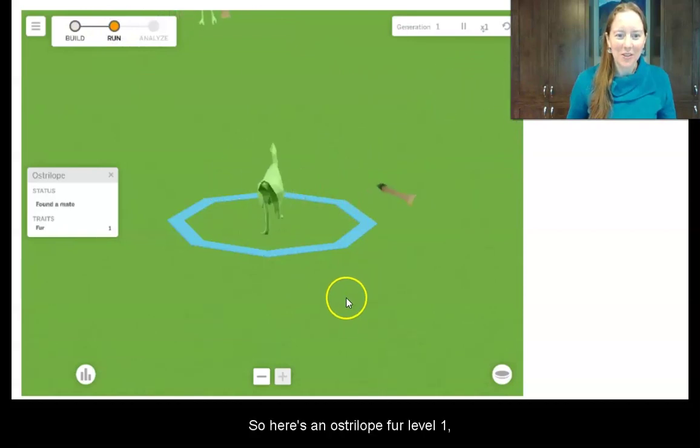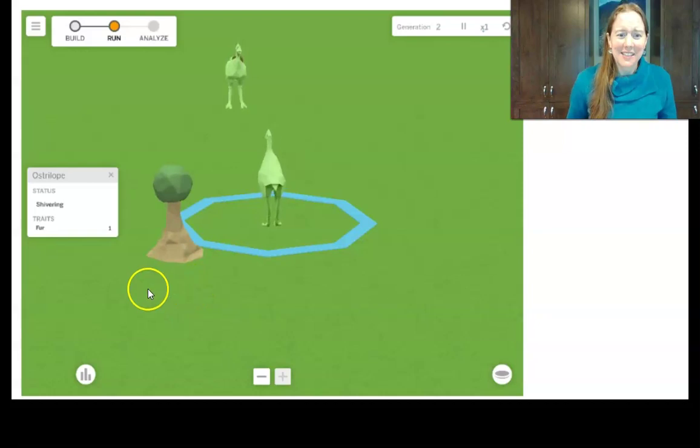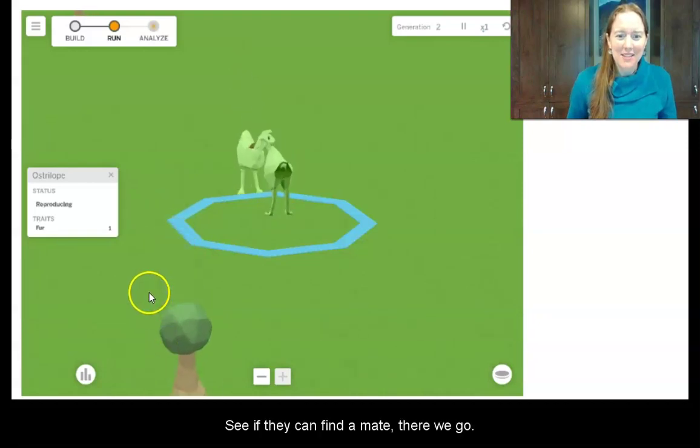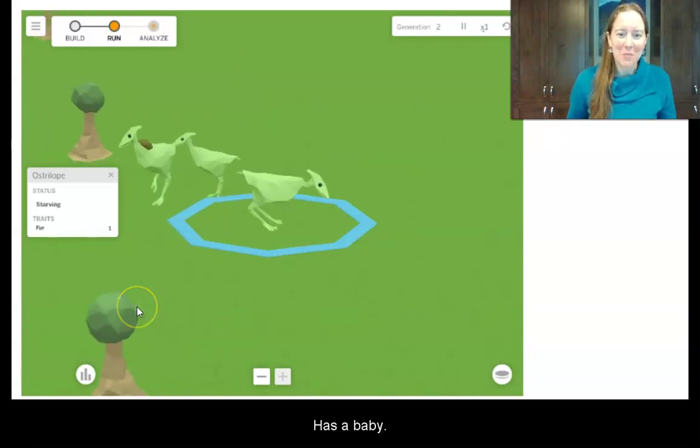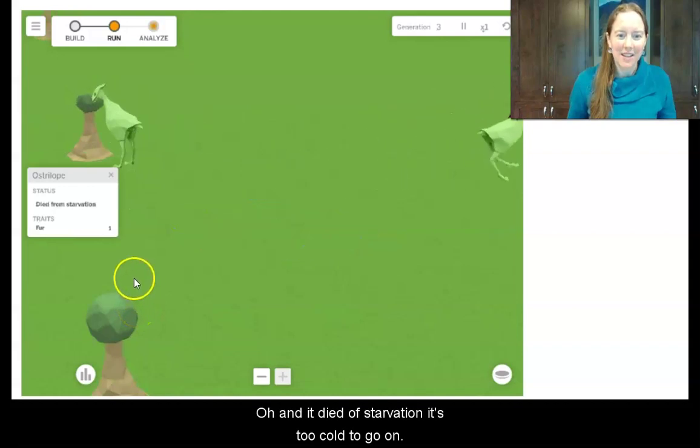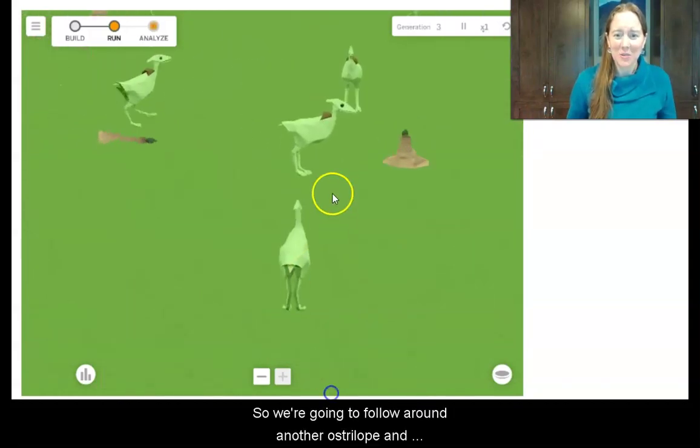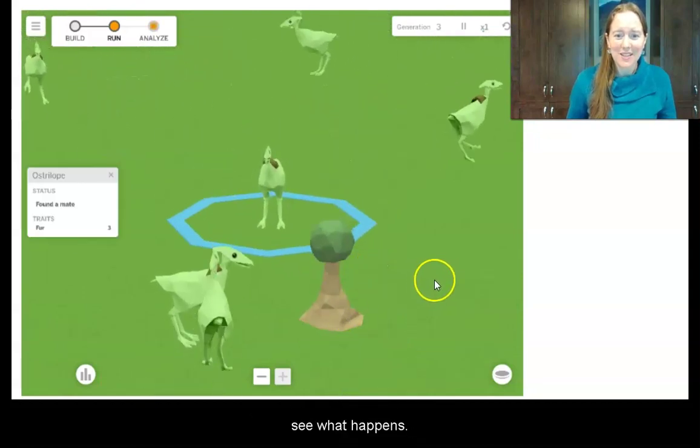Okay, so here's our Australopes for level 1. Oh, it's shivering. It's cold. Let's see if we can find a mate. There we go. It has a baby. Oh, and it died of starvation. It's too cold to go on. Alright, so we're going to follow around another Australopes and see what happens.